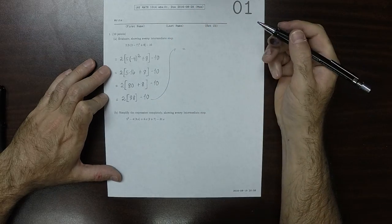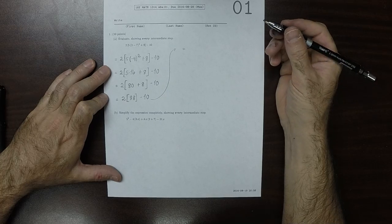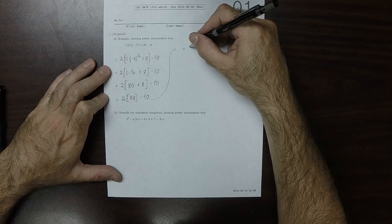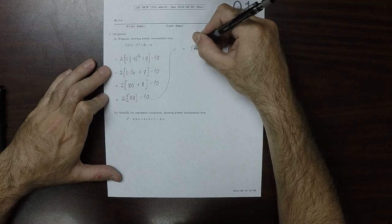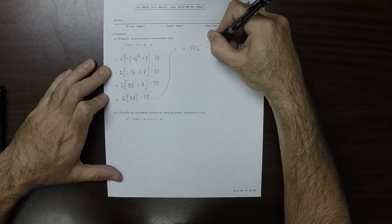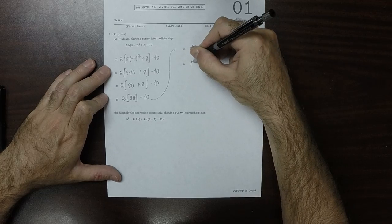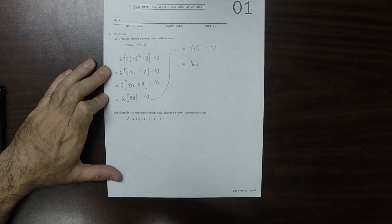So that would be 2 times 88 which is 160 plus 16, so that is 176, and then minus 10, so 166 is the answer to part A.